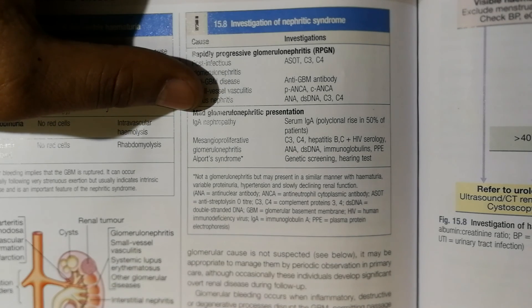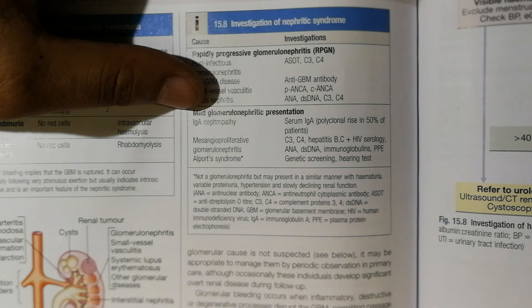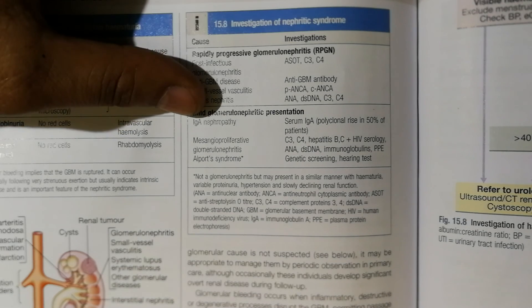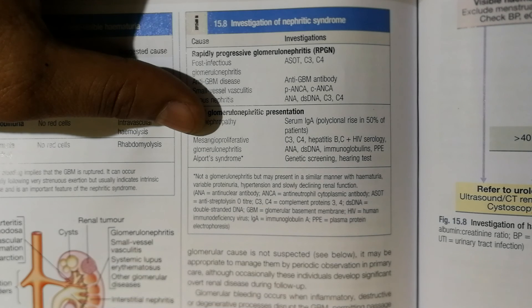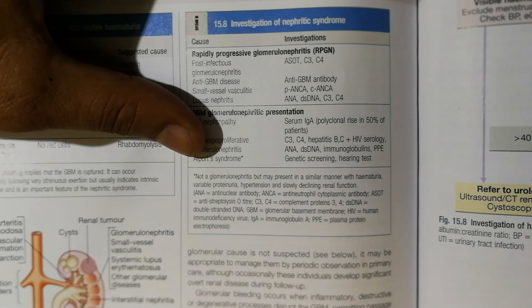Mild glomerulonephritis with nephritic presentation means no visible hematuria, no fluid retention, mild hypertension, mild renal impairment, and not progressing very rapidly. IgA nephropathy is most common. Do serum IgA for polyclonal rise in 50% of patients. For mesangioproliferative glomerulonephritis, do C3, C4, hepatitis B and C, and HIV serology. For Alport syndrome, do genetic testing and hearing test.